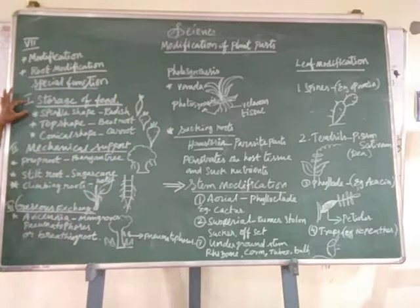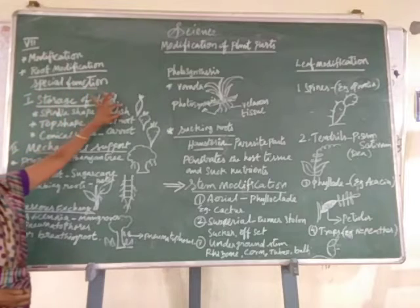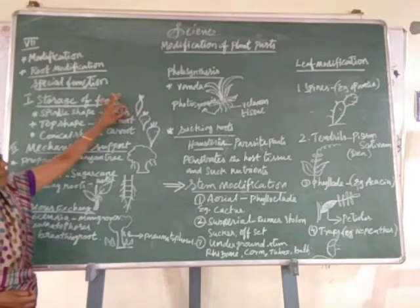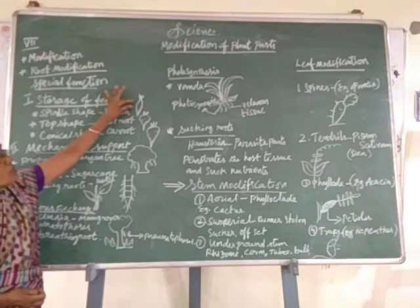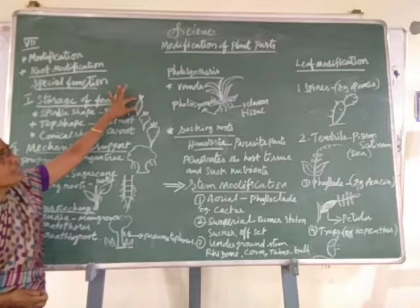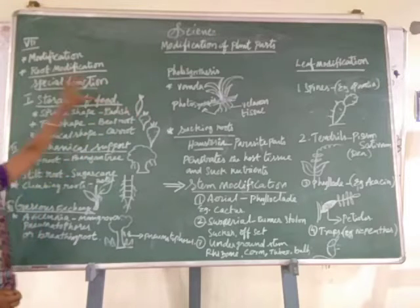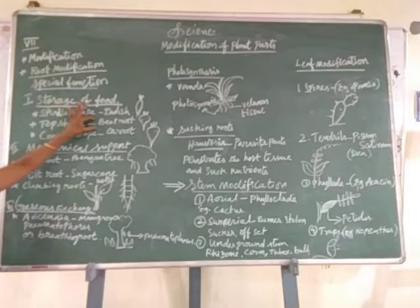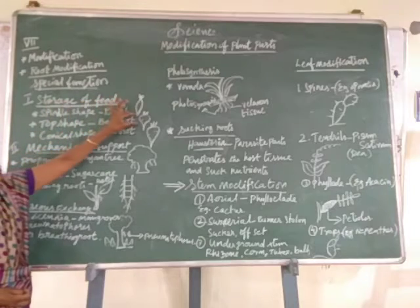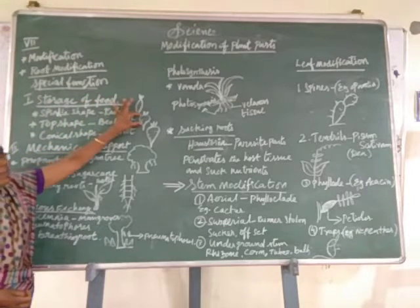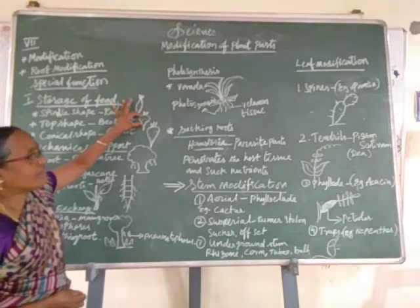First, storage of food. Spindle shape — radish is a taproot system. It is the swollen part, with the middle part swollen and tapering to a small size. Then tap shape — beetroot, with the swollen part in the fleshy region.